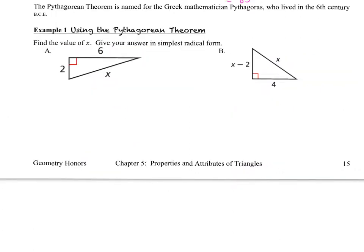The Pythagorean Theorem is named for the Greek mathematician Pythagoras, who lived in the 6th century BCE. The Pythagorean Theorem says if you have a right triangle and you name the sides — leg 1, leg 2, and hypotenuse — then the hypotenuse squared is equal to the sum of the squares of the two legs. Typically we call these A, B, and C, and write it as C squared equals A squared plus B squared. Remember that A, B, and C are not specifically tied to specific sides.